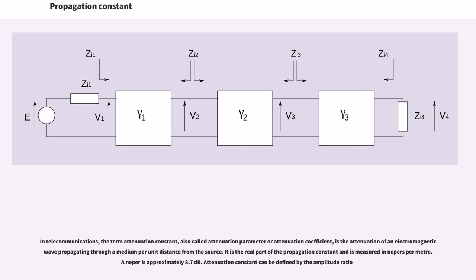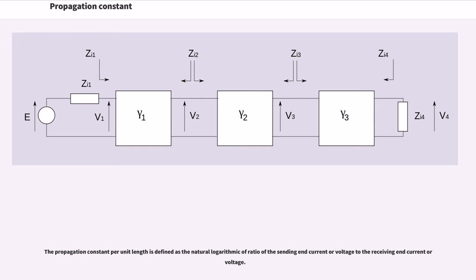In telecommunications, the term attenuation constant, also called attenuation parameter or attenuation coefficient, is the attenuation of an electromagnetic wave propagating through a medium per unit distance from the source. It is the real part of the propagation constant and is measured in nepers per meter. A neper is approximately 8.7 decibels. Attenuation constant can be defined by the amplitude ratio.